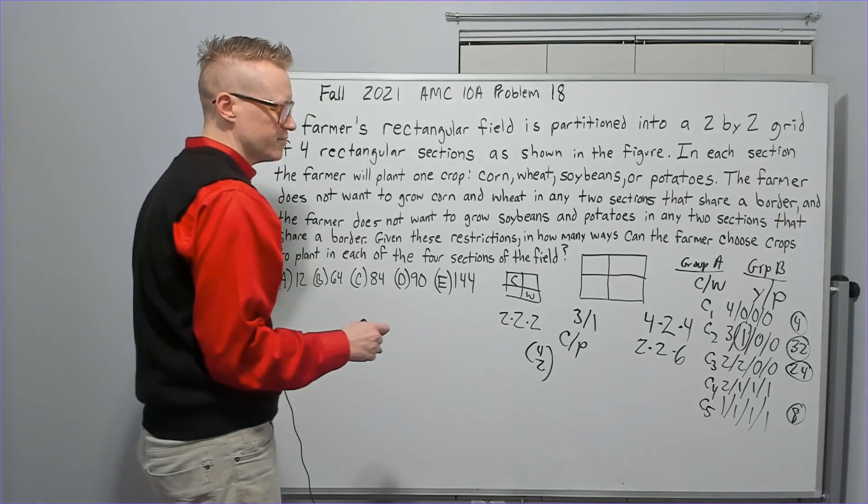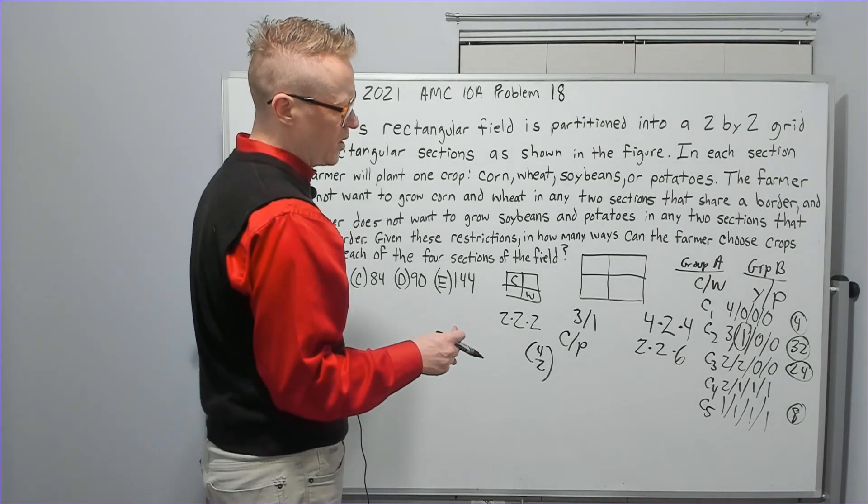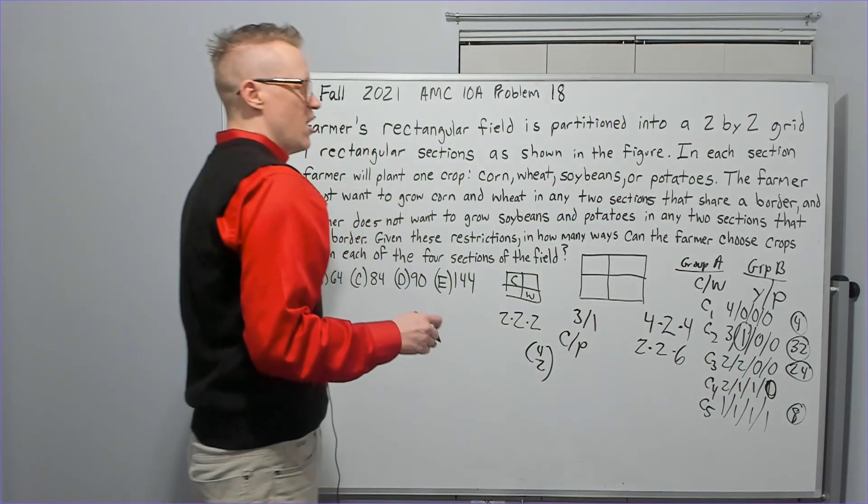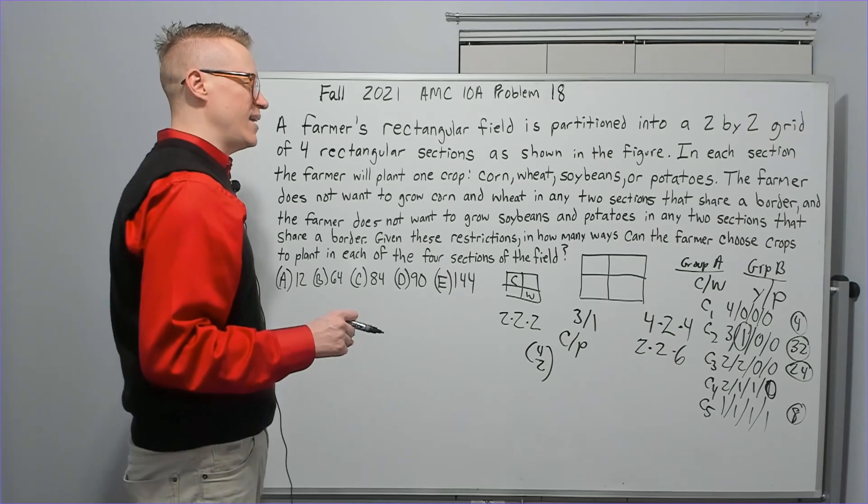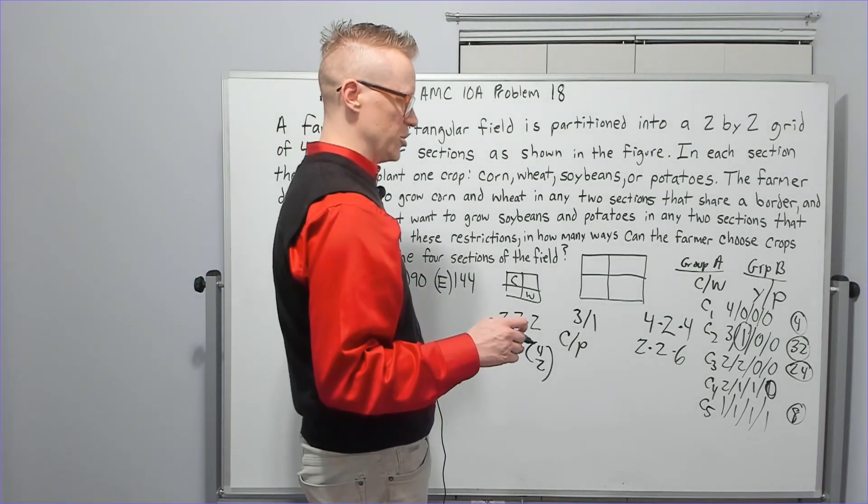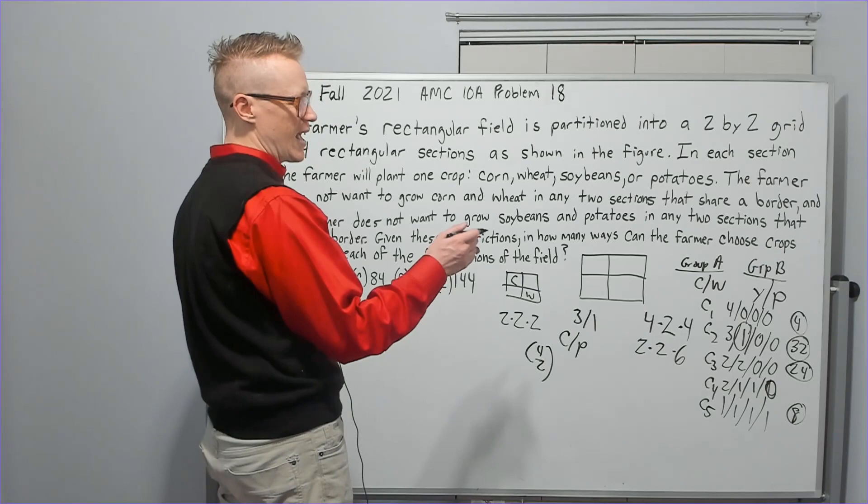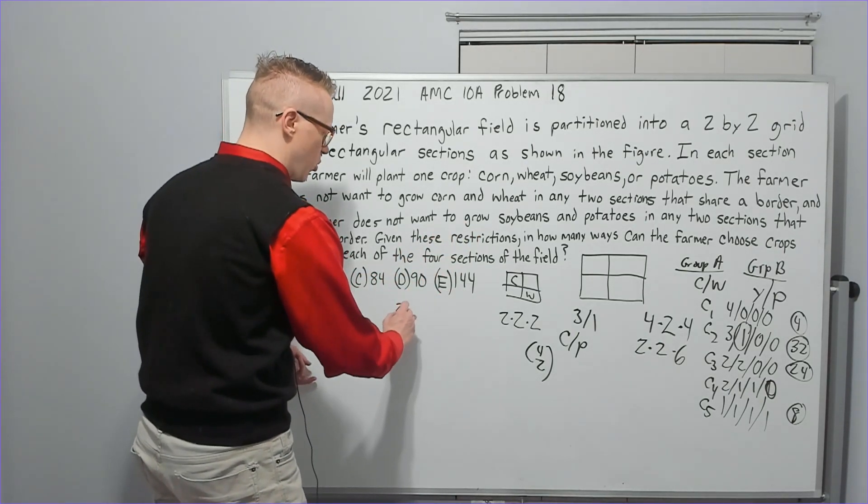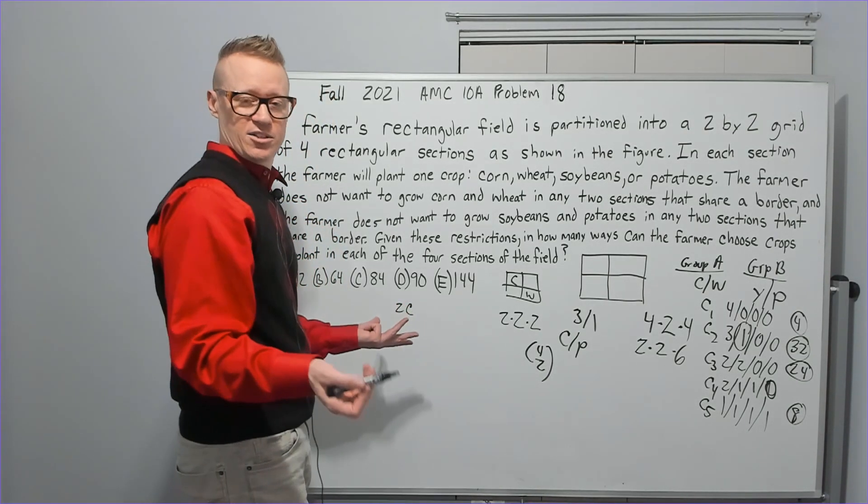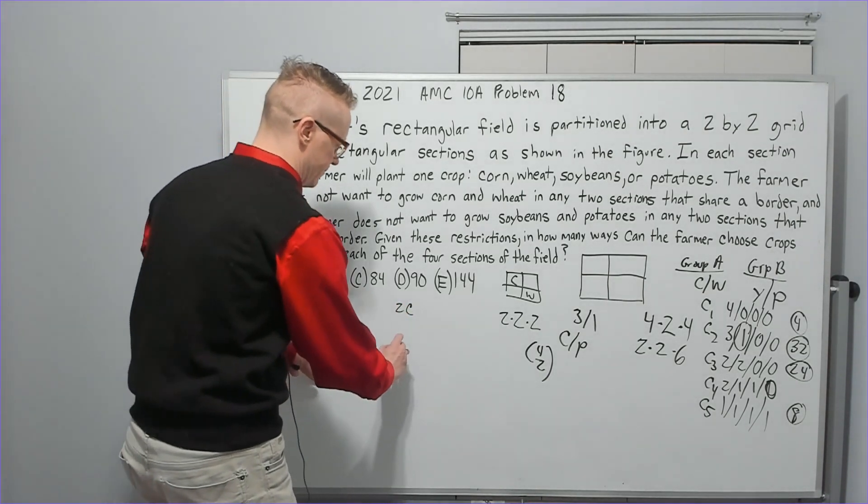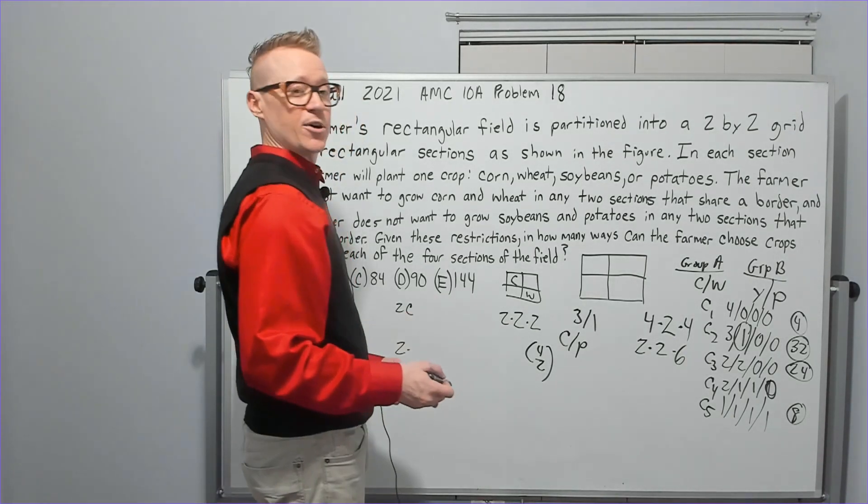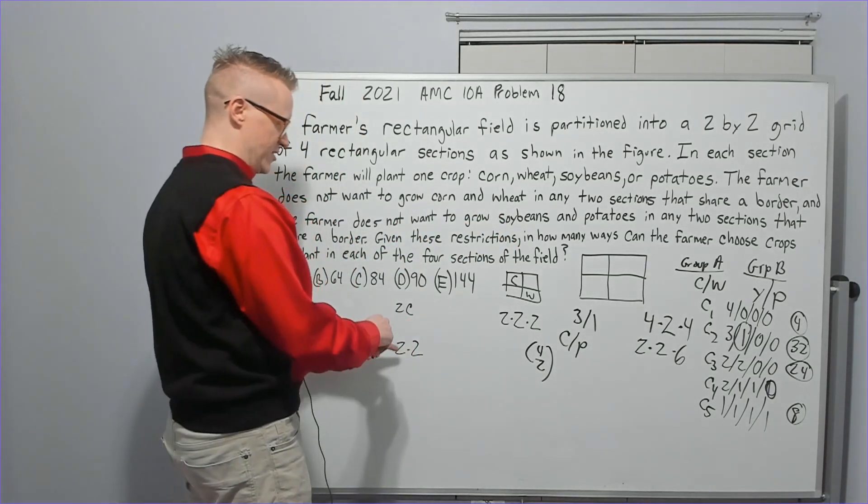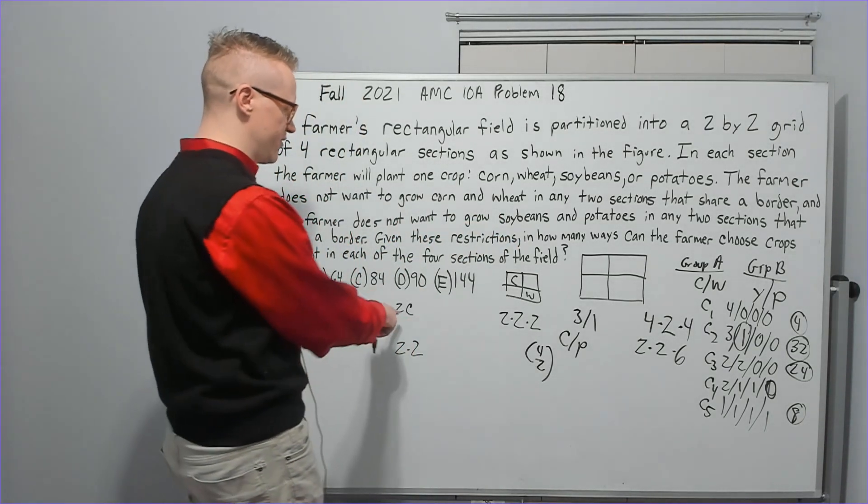Case four, this is 2, 1, 1, 0. Now, if I do from the same group, let's say I have two corn, for instance. First, pick a group that you're going to pick the two from. You have two choices for that. Once you've chosen that group, which crop are you going to have two of? Let's say we did corn again, just to keep it simple. That's two times two. Okay. So now we've got our two corns. Could we possibly have wheat to be picked right now? Actually, no. Why not?